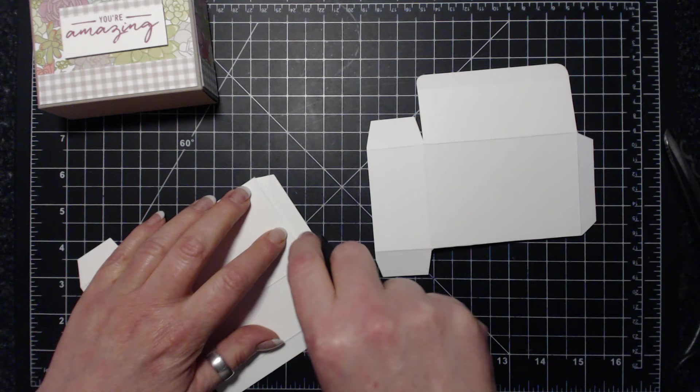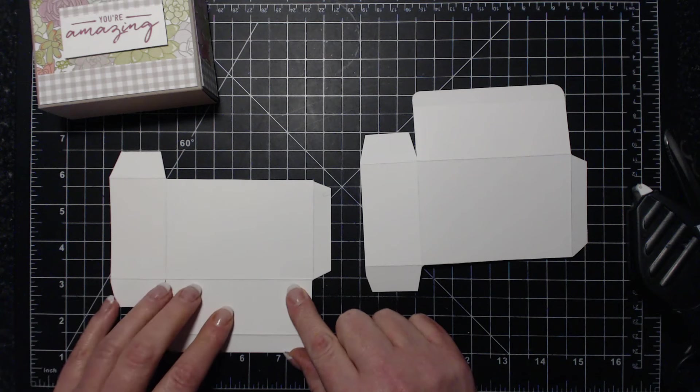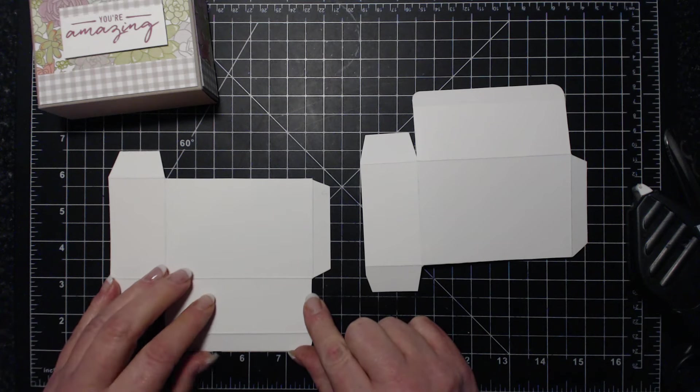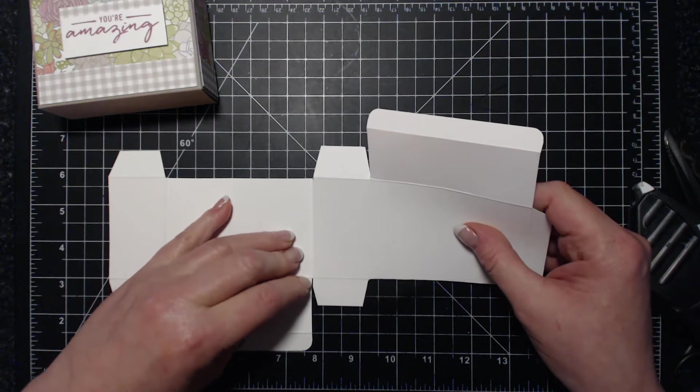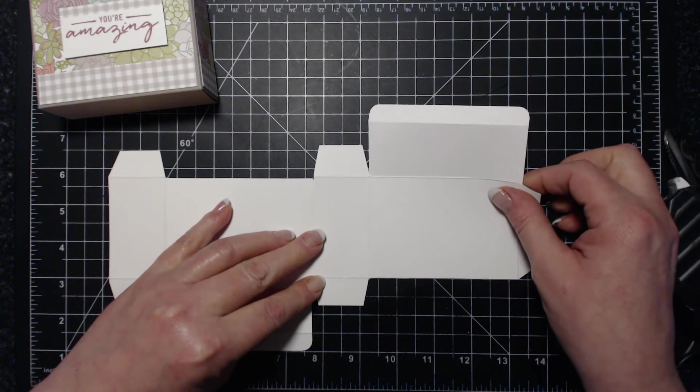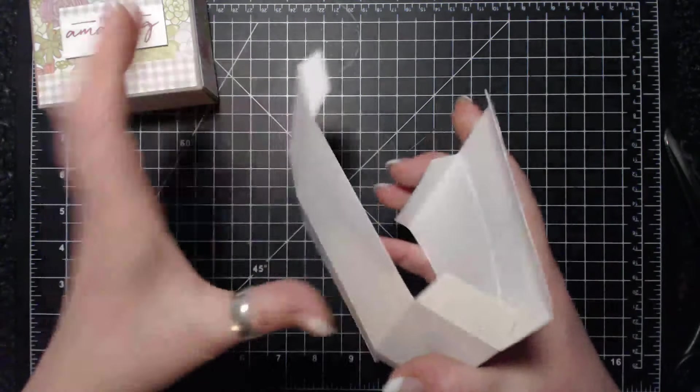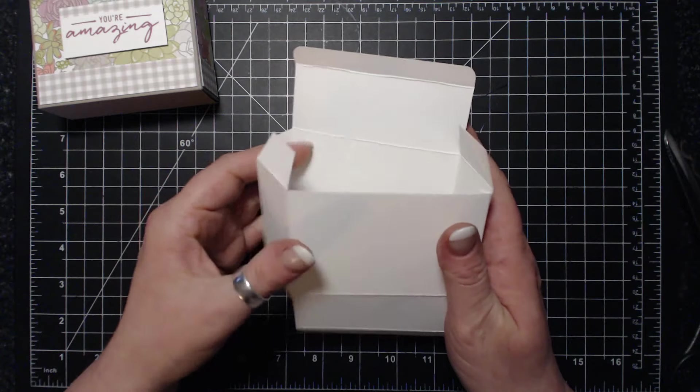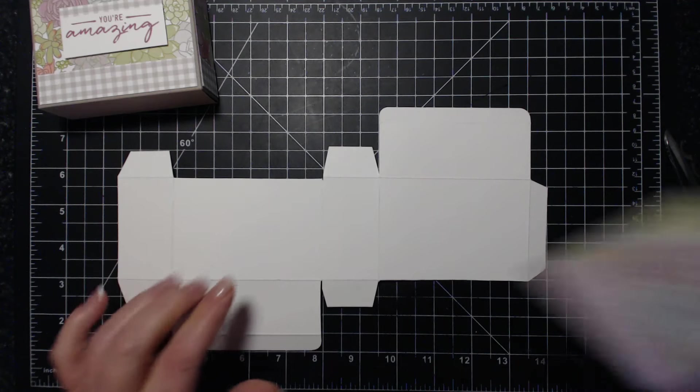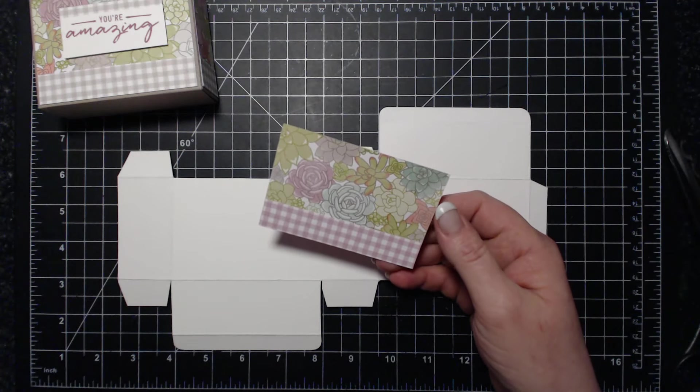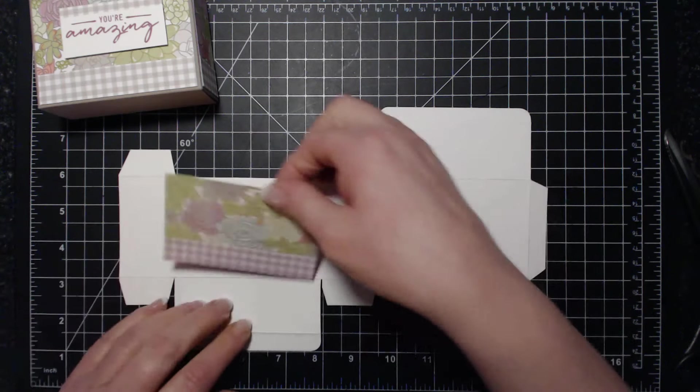So how I do that is I'm going to line my score line up with a line here on my craft sheet, craft mat, and the score line here, just to make sure that I'm nice and square. So this is the front and this is the back. I have a piece of designer series paper or pattern paper, and the front and back are three and seven eighths by two and five eighths, had to look that up.